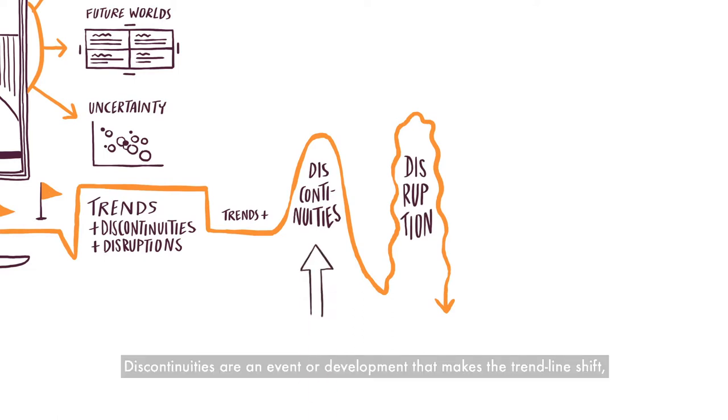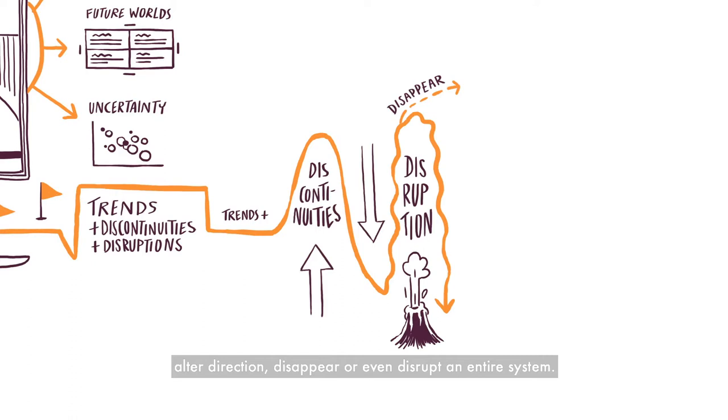Discontinuities are an event or development that makes the trend line shift, alter direction, disappear or even disrupt an entire system.